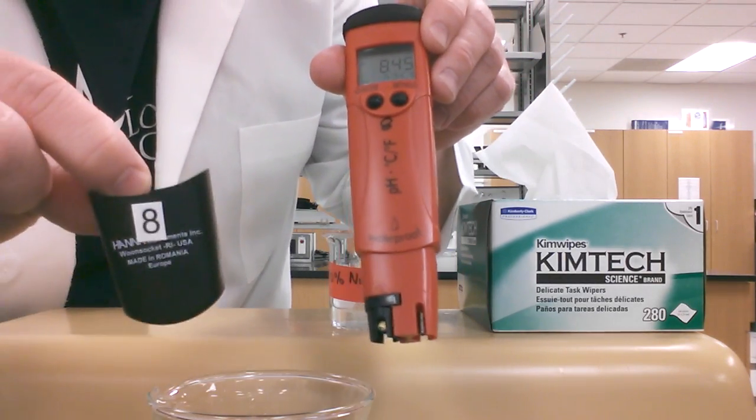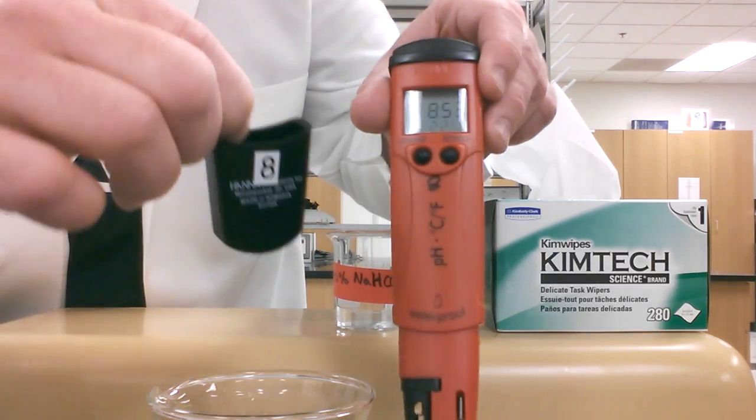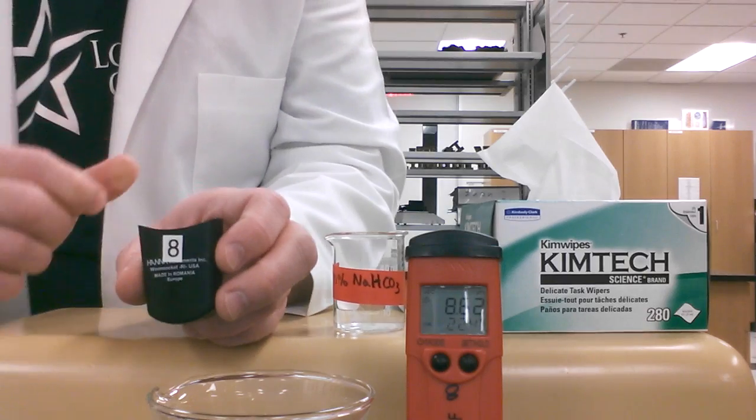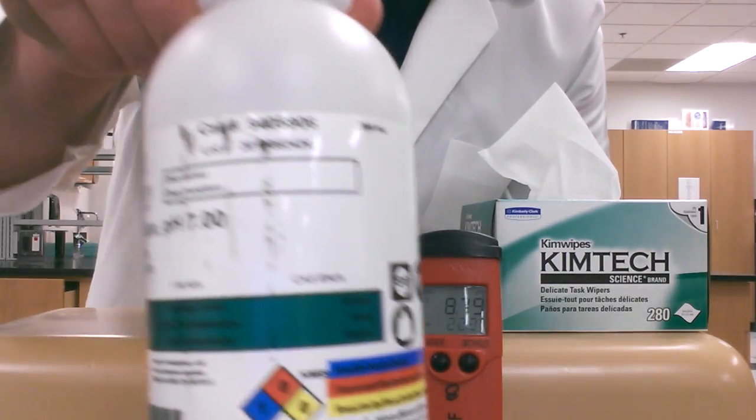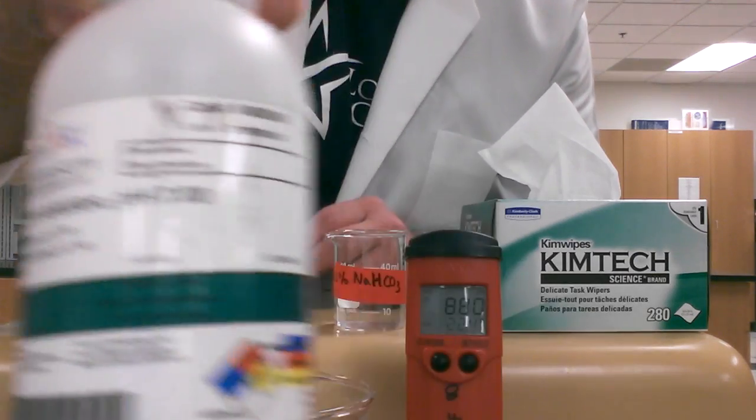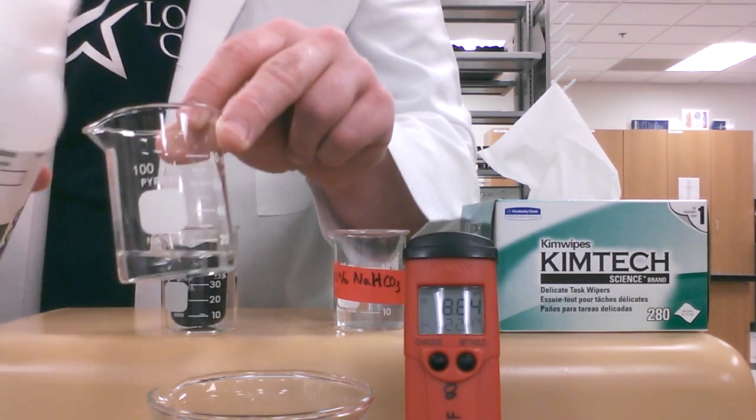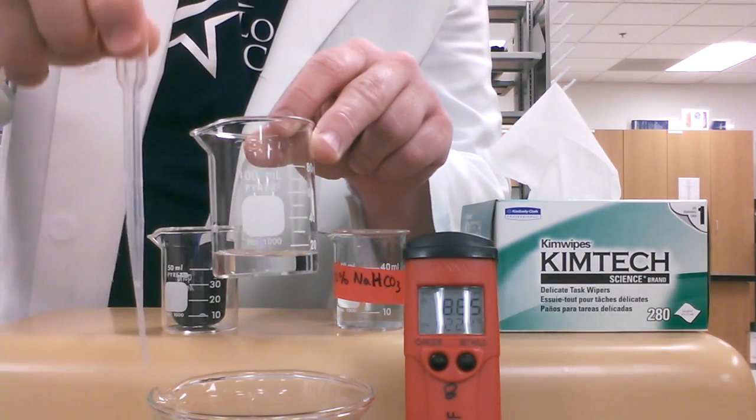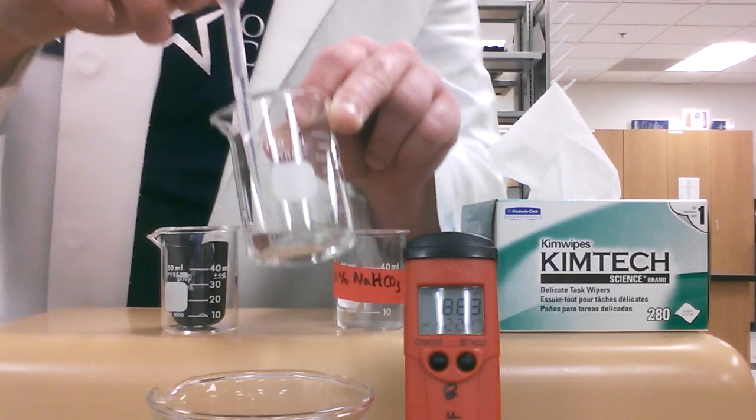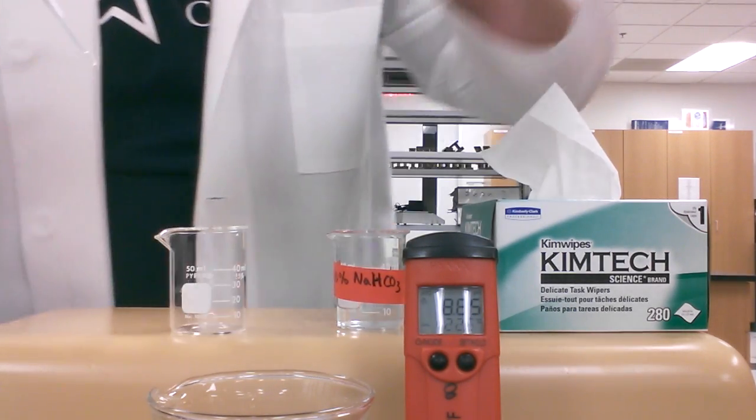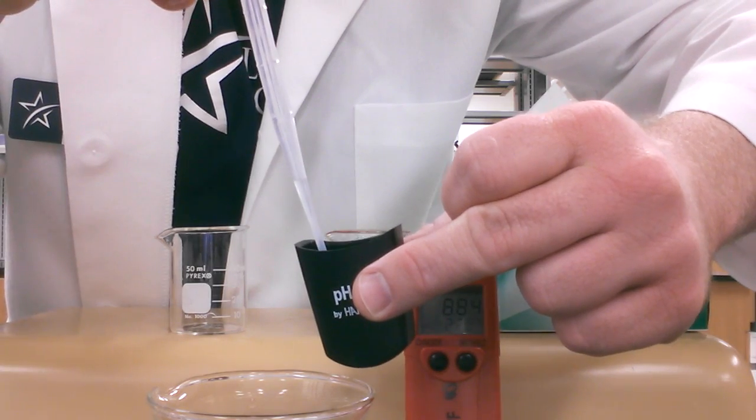When you're ready to put this back on, you're going to have to make sure that there's a buffer solution inside that cap in case we spilled any out when we were taking it off. We're going to set our pH meter to the side and take some pH 7 buffer solution. We're going to pour some into a beaker, just a little bit. After we've poured some into a beaker, we can take our plastic disposable pipette or dropper and suck some up.